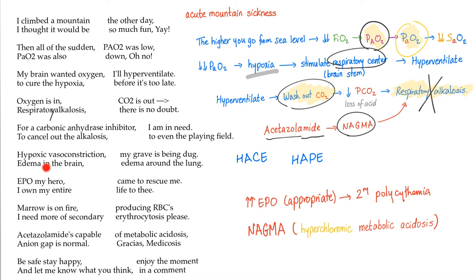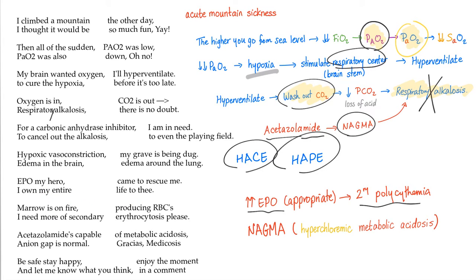Edema in the brain. Edema around my lung. EPO, my hero, came to rescue me. I owe my entire life to thee. Marrow is on fire, producing RBCs. I need more of secondary erythrocytosis, please. Acetazolamide is capable of causing metabolic acidosis. Anion gap is normal — gracias, medicosis.